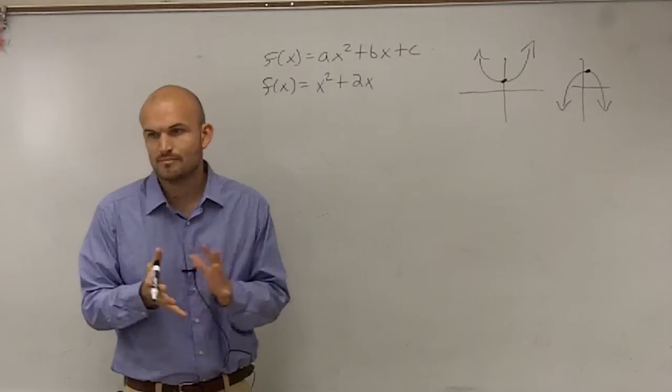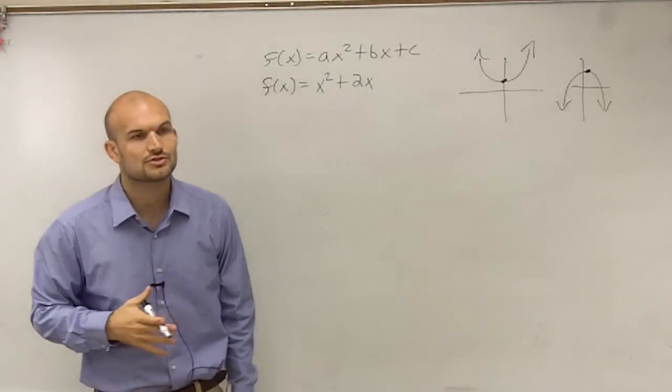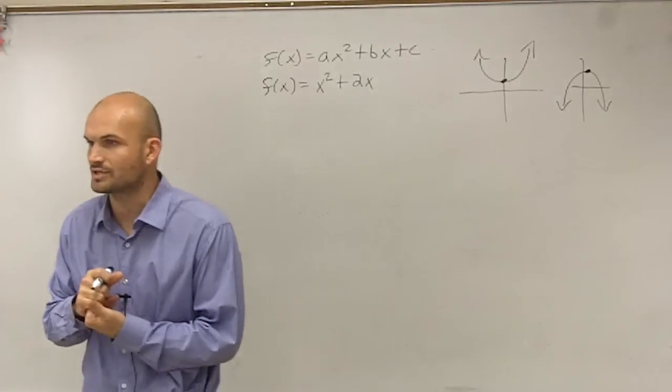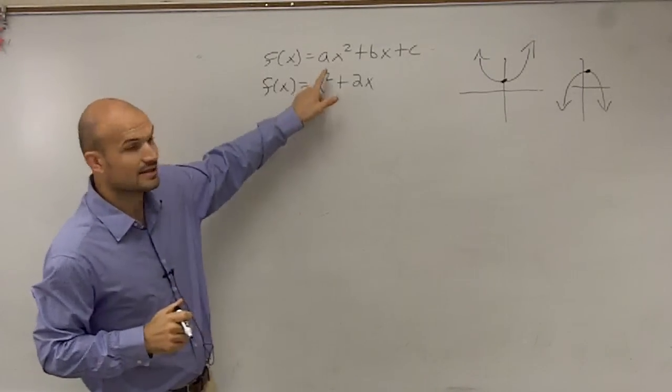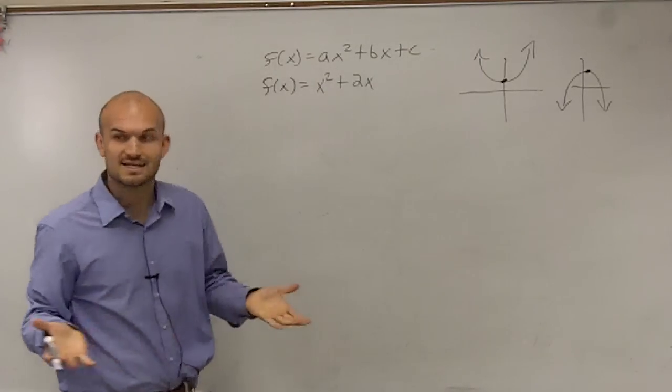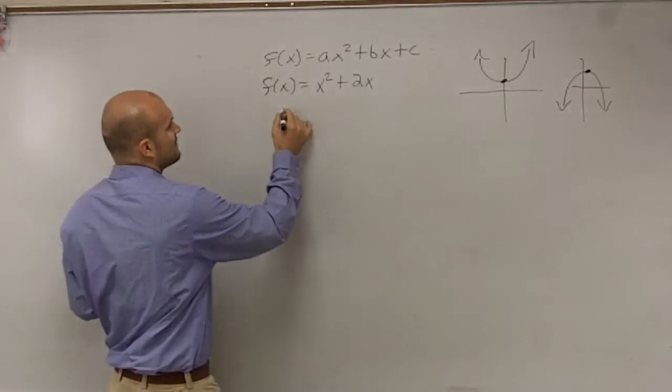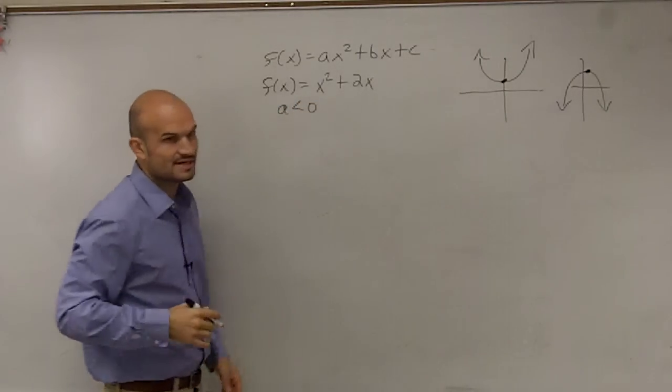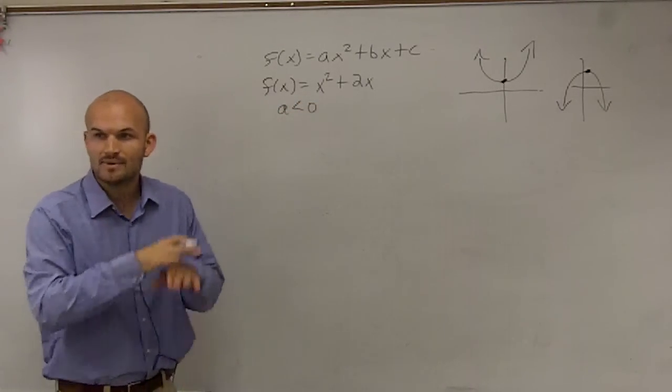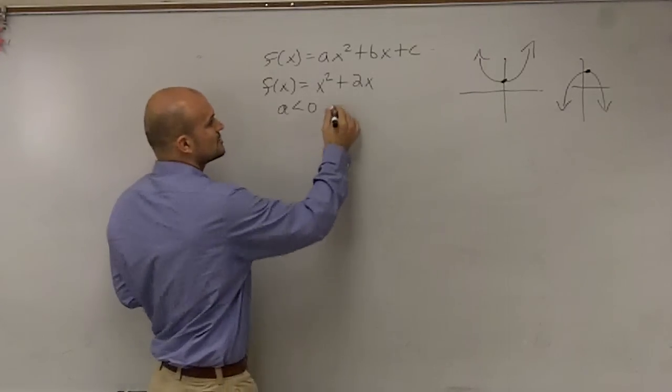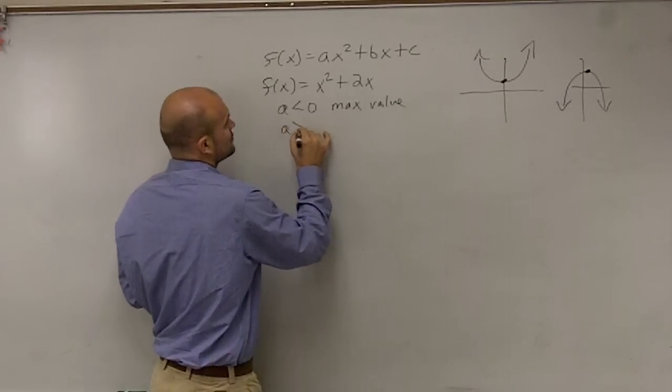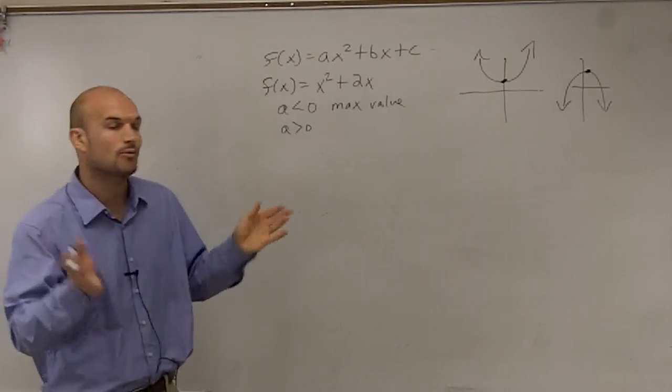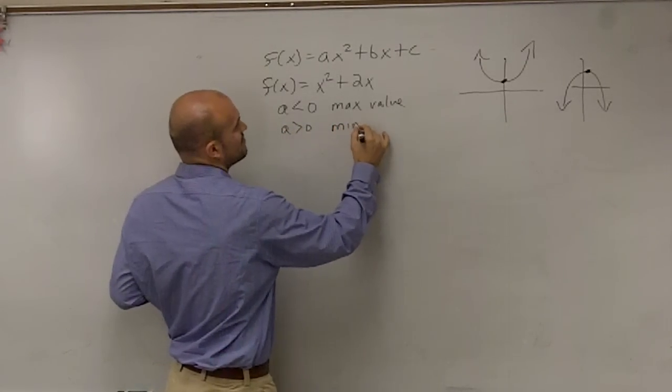Right? Now, do you guys remember what part of the quadratic function told us if it was going to open up or if it was going to open down? Does anybody remember? Yes. A, exactly. Remember, there was a rule. There was a test that we wrote down in our notes. If a was less than 0, right, that means our graph opened down, so we had a max value. And if a was greater than 0, that means our graph opened up, meaning we'd have a minimum value.